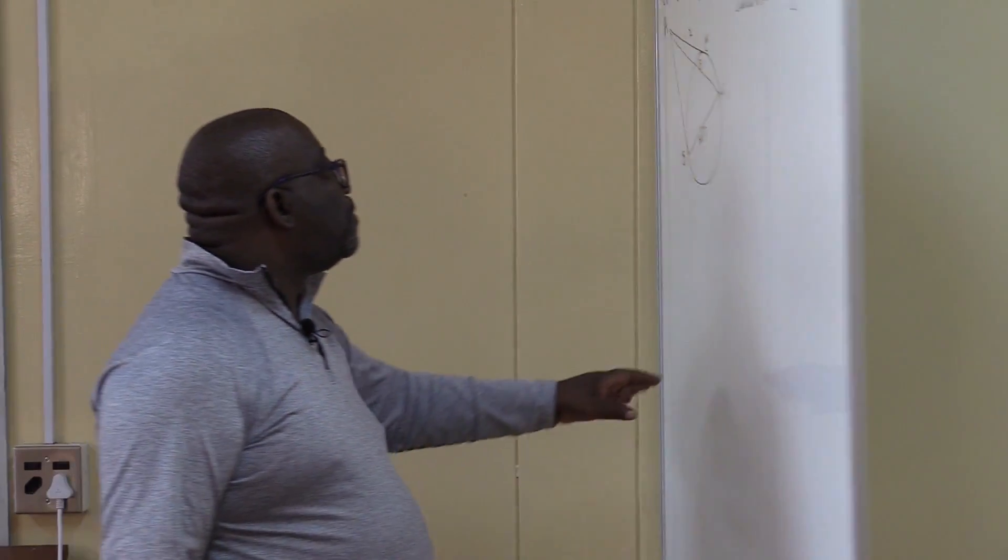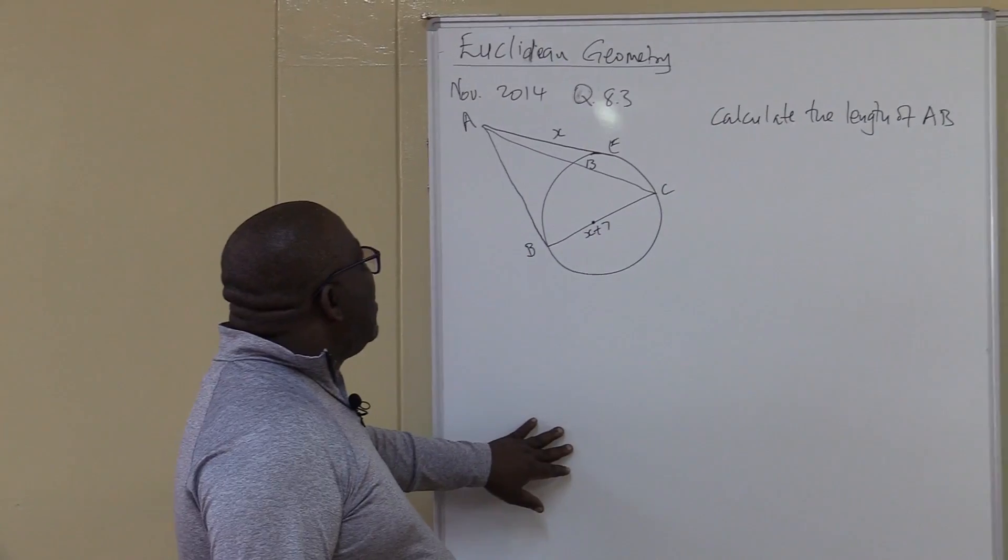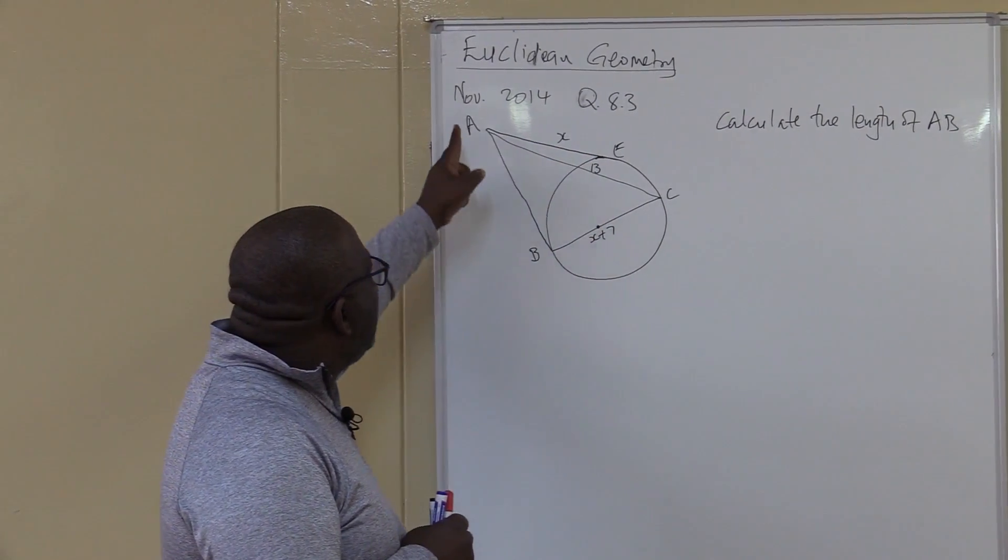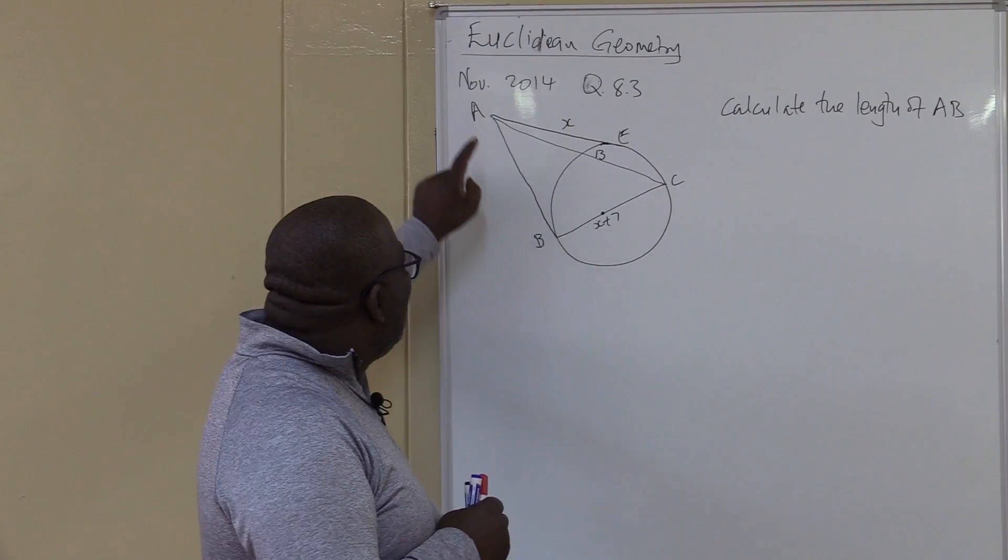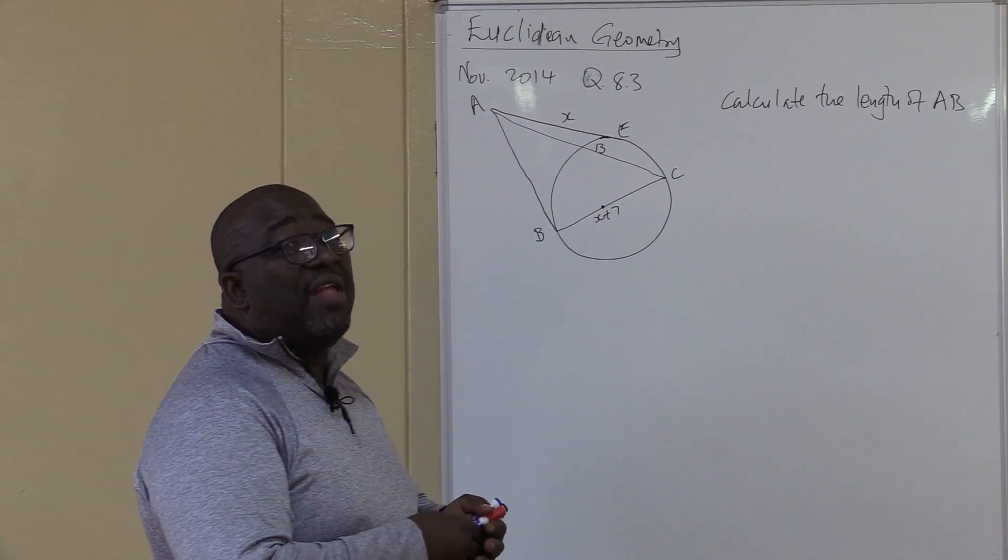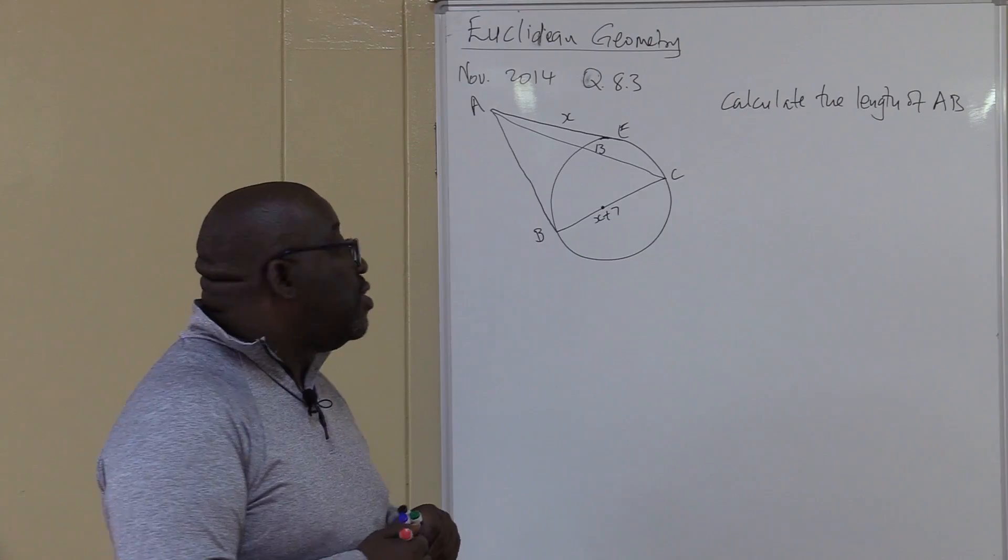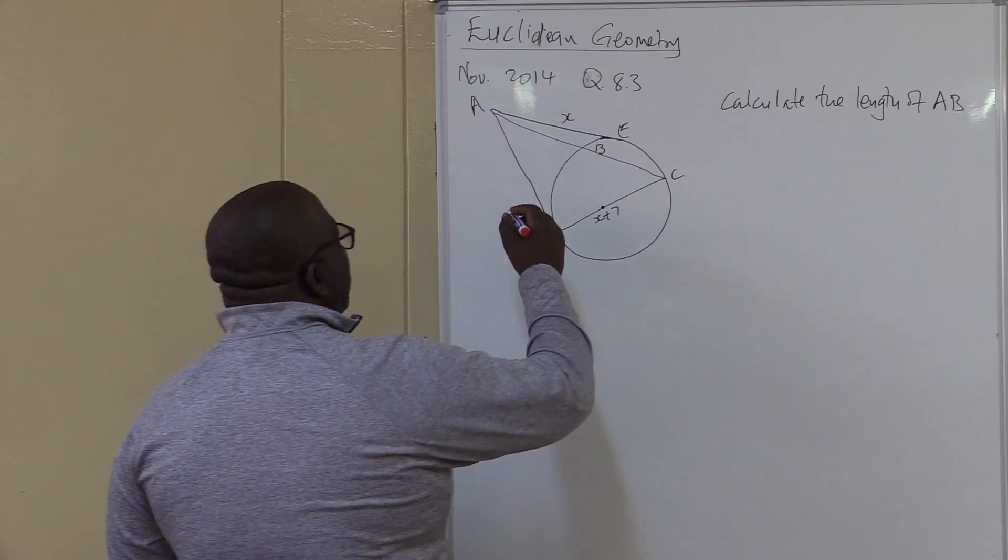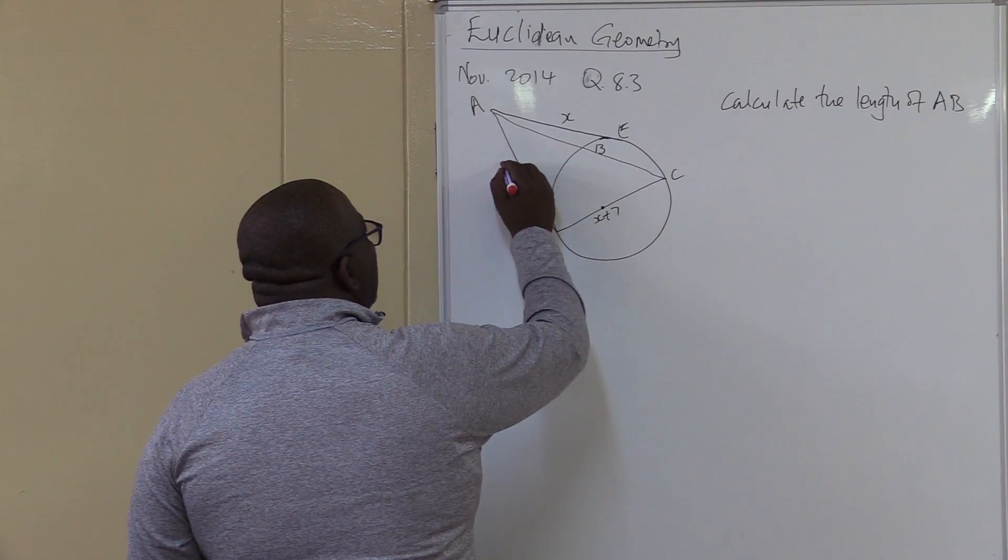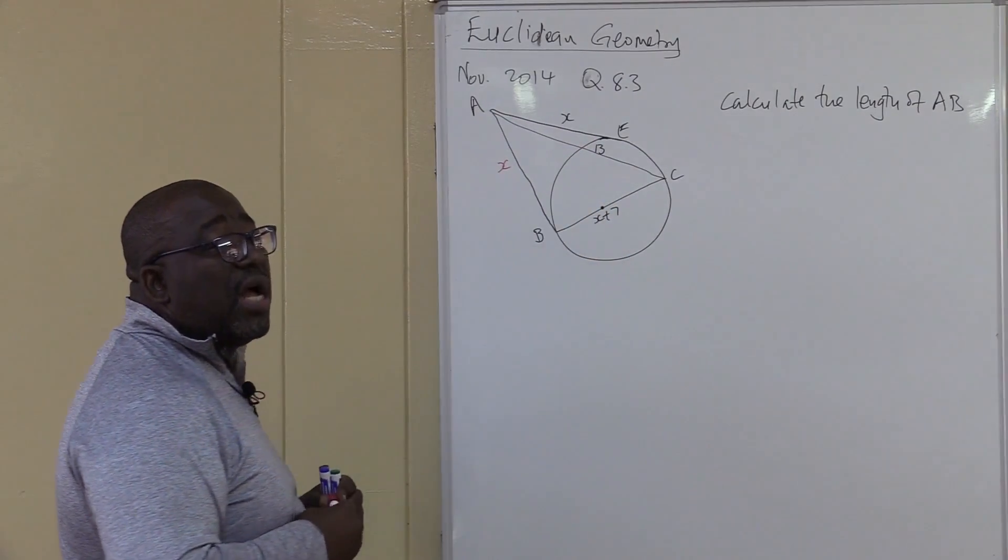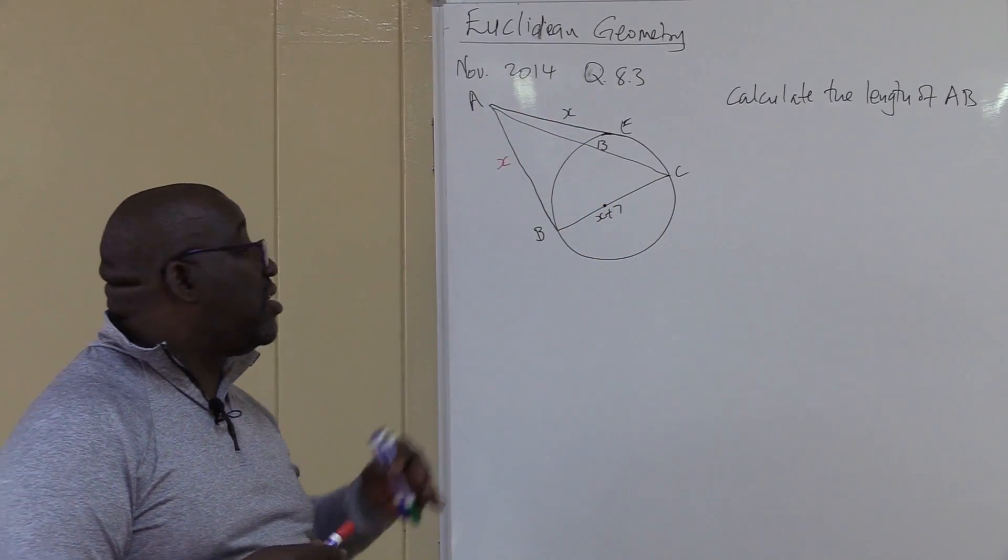Now given this part, you only look for theorems where you are. Look at AE, it is a tangent. Look at AB, it is also a tangent. And they are coming from the same point outside the circle. Then they are equal. So the first thing that you need to conclude there is that if this is X, this one will also be X. Because these two lines are the same. They are tangents from the same point outside the circle.